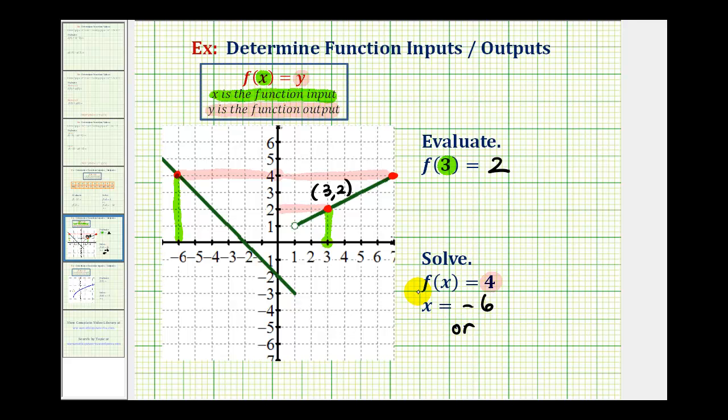Or, on the right side, if we start at this point and go down to the x-axis, notice how we have x equals, this would be positive seven. So we have two solutions to f of x equals four. X equals negative six, or x equals positive seven.